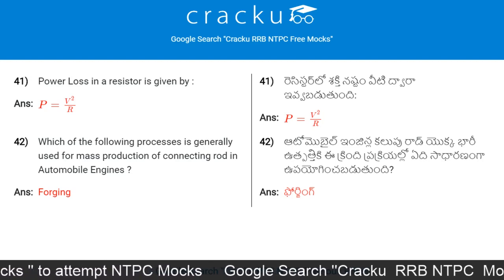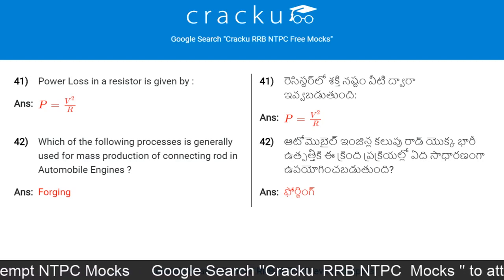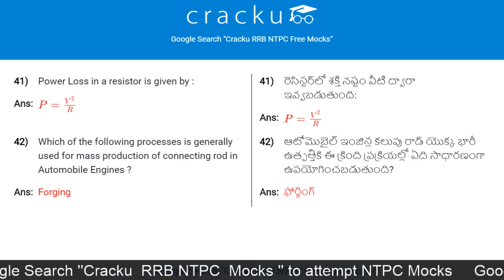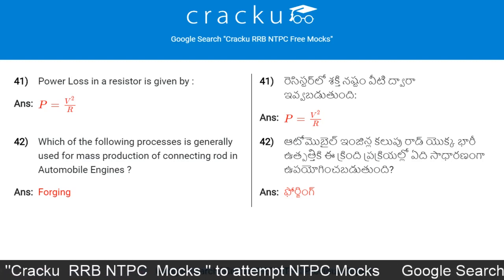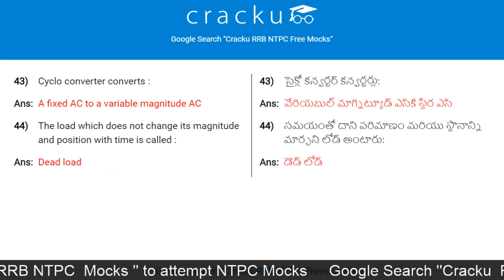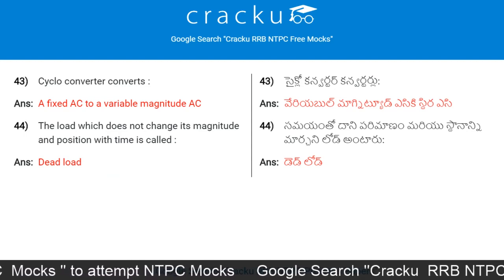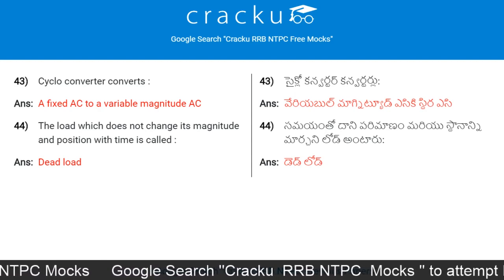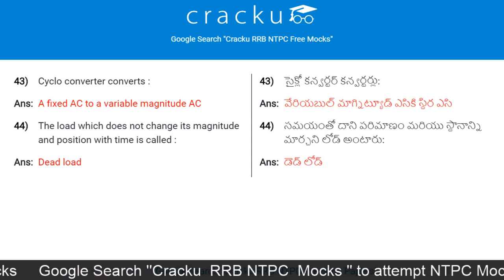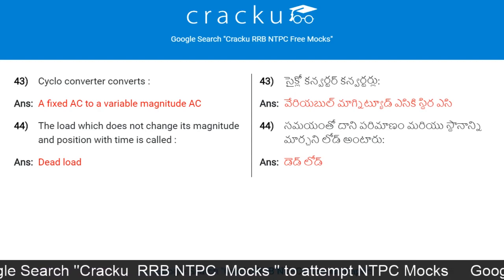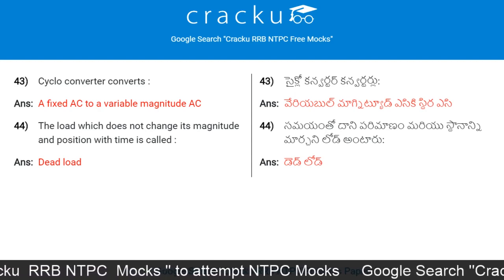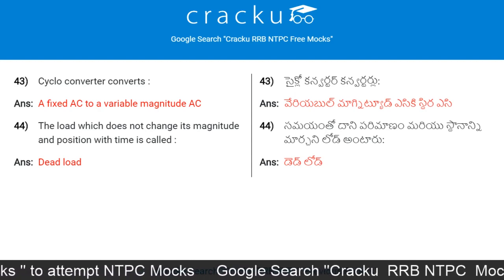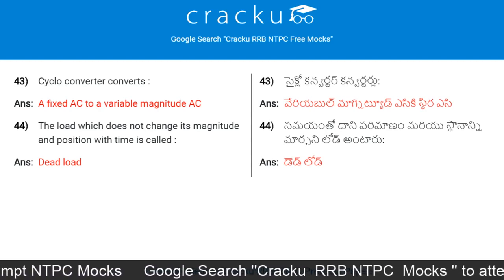Which process is generally used for mass production of connecting rods in automobile engines? Forging. A cycloconverter converts a fixed AC to a variable magnitude AC. The load which does not change its magnitude and position with time is called a dead load.